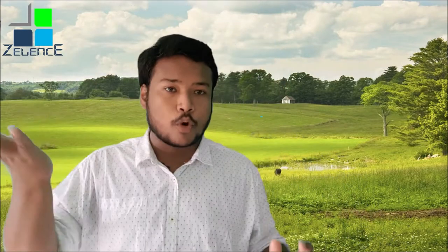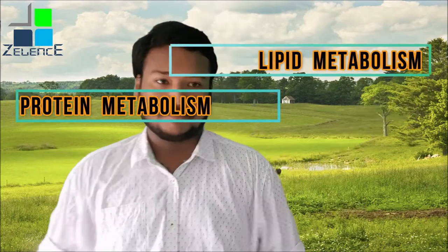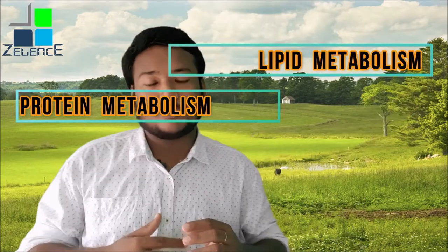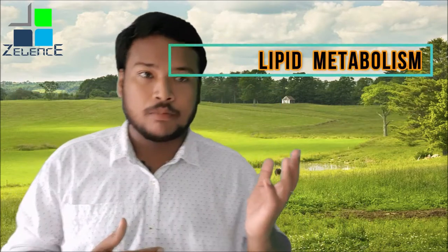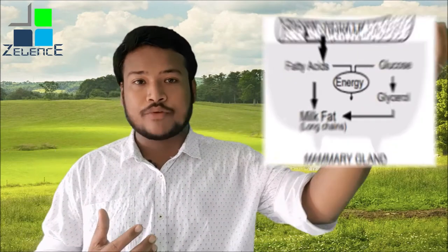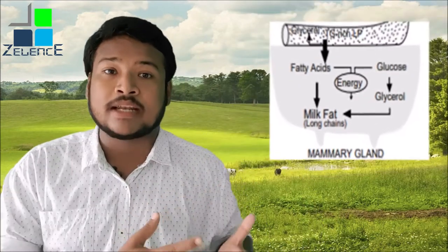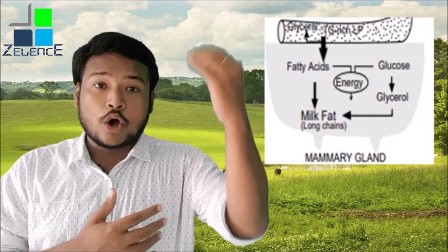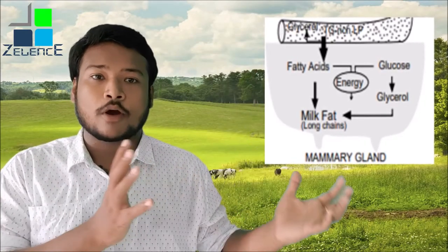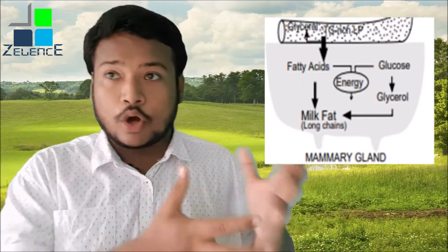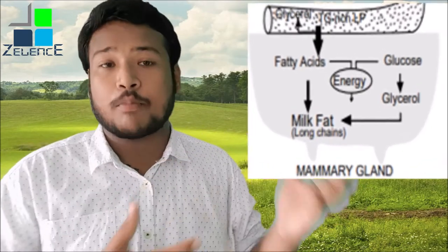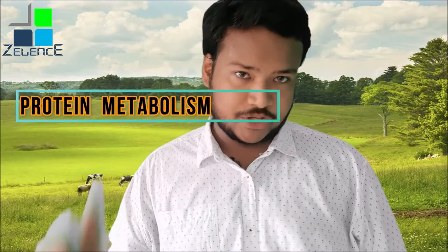Now let's discuss lipid metabolism. As the name suggests, lipids convert into long-chain fatty acids, and glucose converts into glycerol as usual. In the mammary glands, the long-chain fatty acids and glycerol form triglycerides — long-chain fats — which are also an important component of milk.